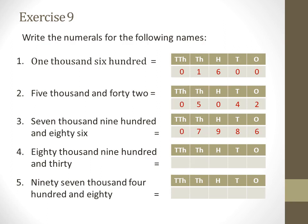Next example is eighty thousand nine hundred and thirty. How many thousands do we have? Eighty thousand — so under the thousands section I will write 8 and 0 for eighty. Then how many hundreds? Nine hundreds — so under the hundreds section I will write 9. Then thirty — under the tens and ones sections I will write 3 and 0 for thirty. So the number is 80,930.